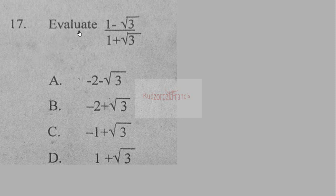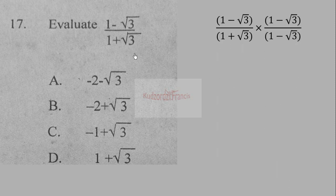We want to evaluate (1 − √3) / (1 + √3). We rationalize by multiplying both numerator and denominator by the conjugate of (1 + √3), which is (1 − √3).